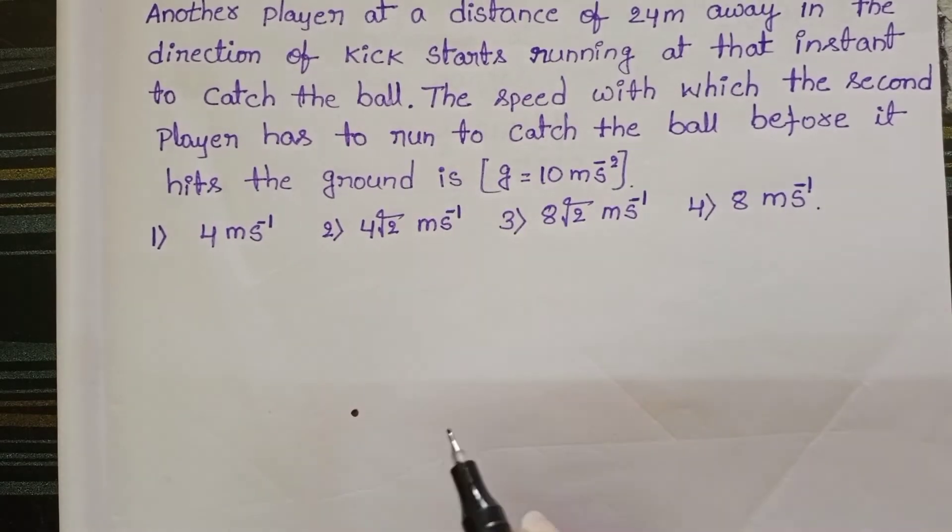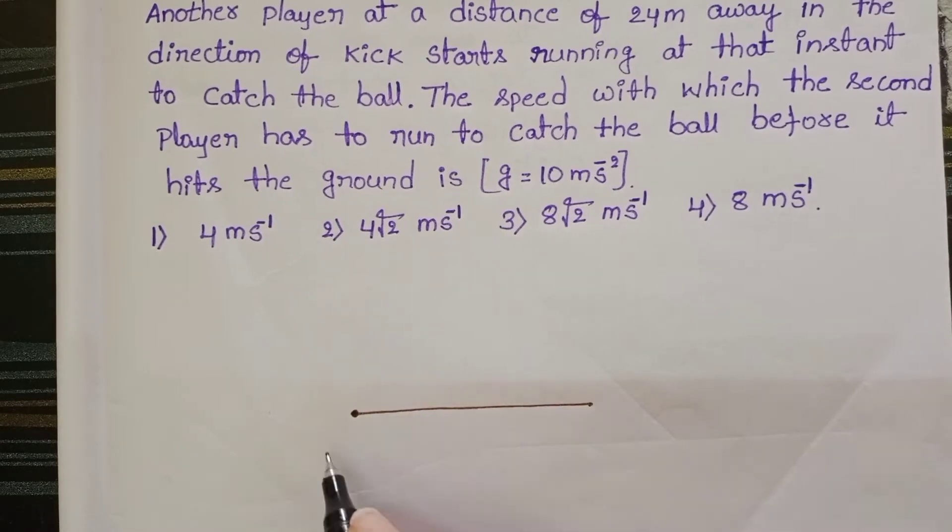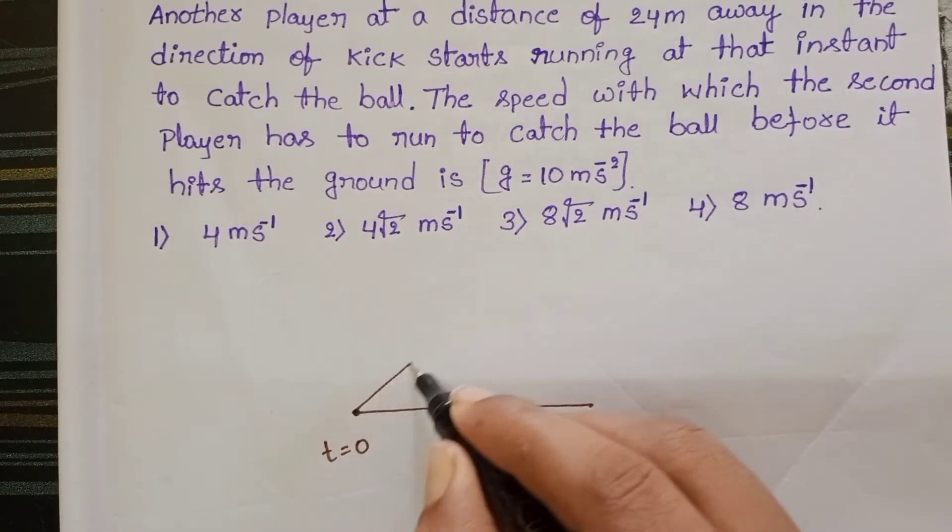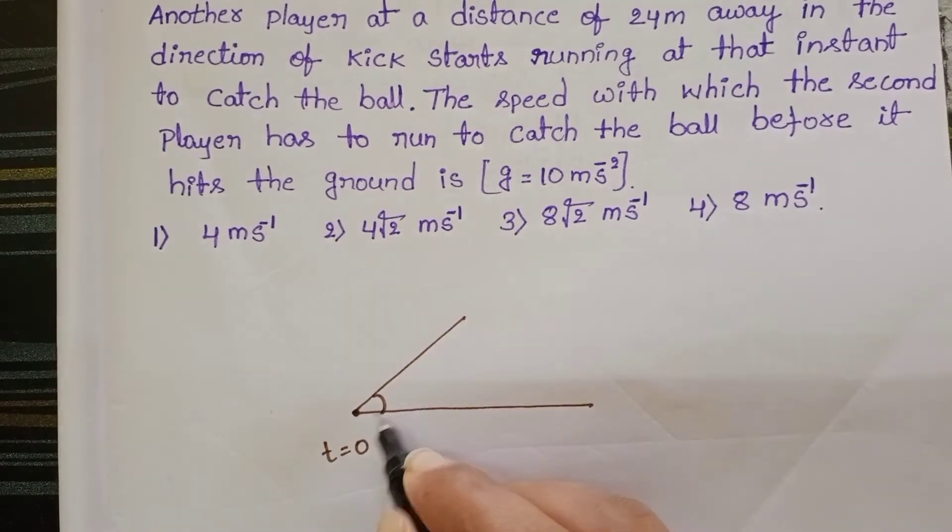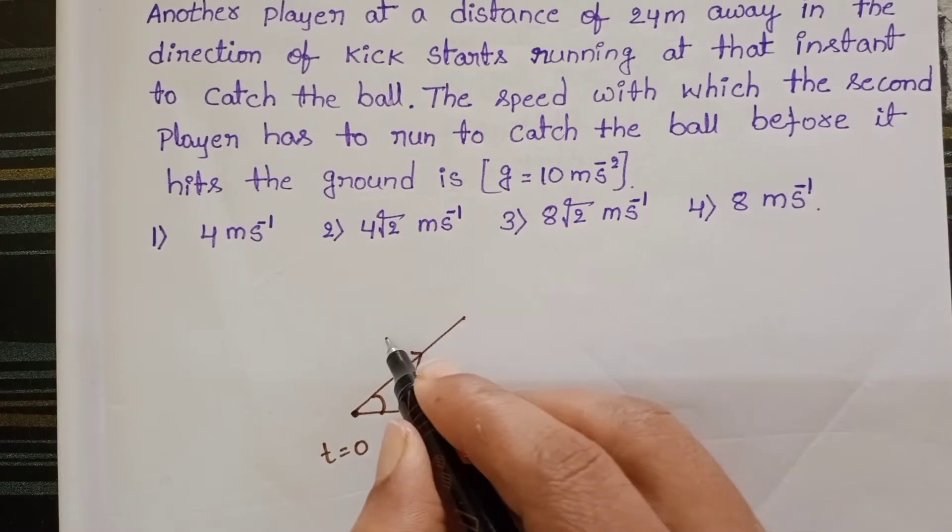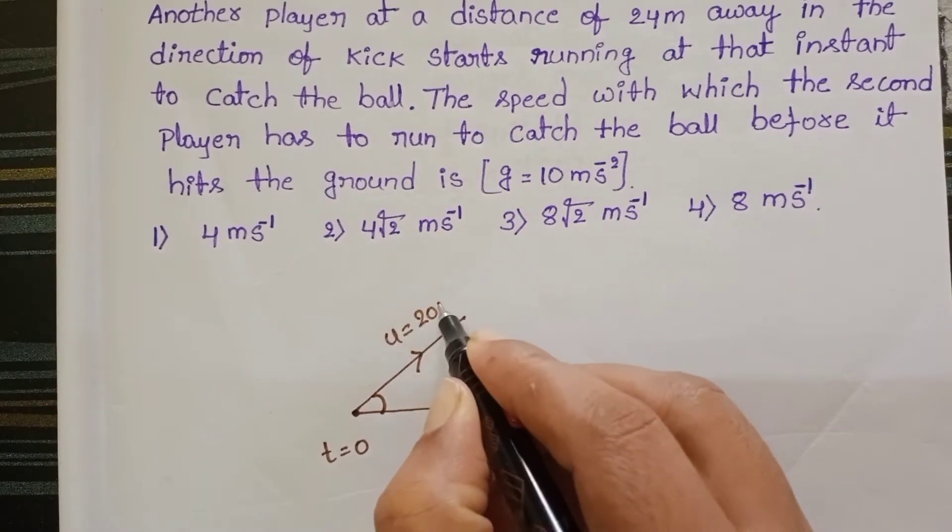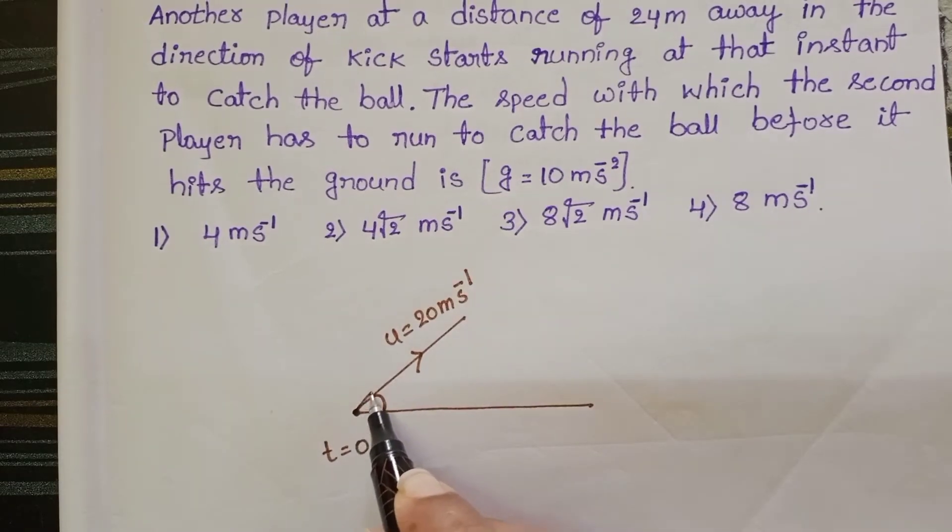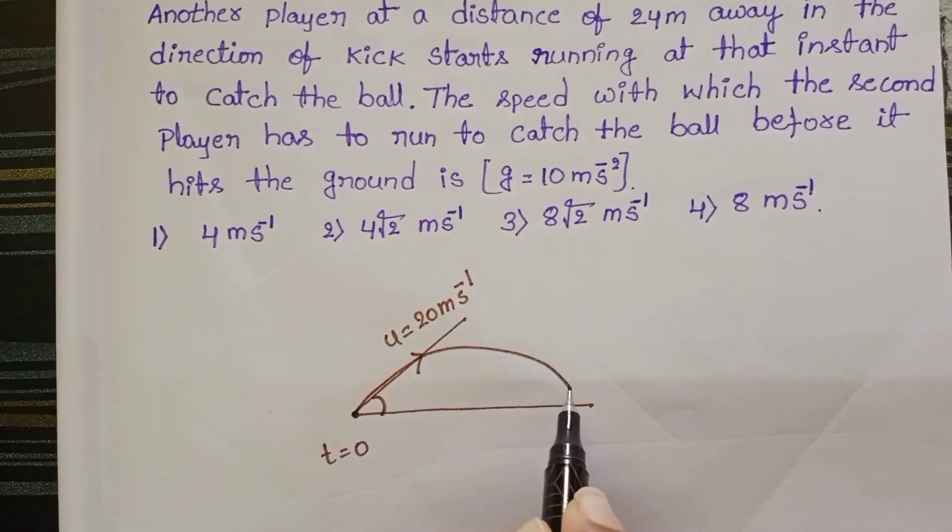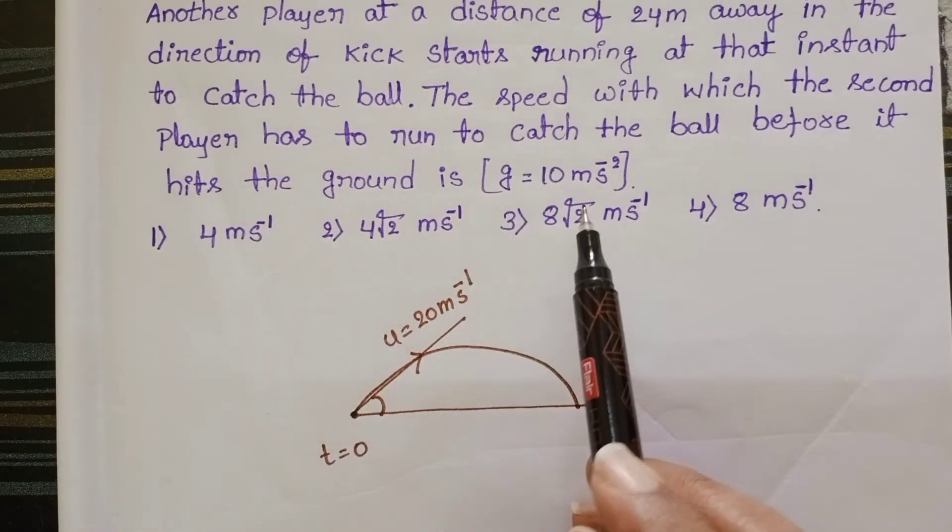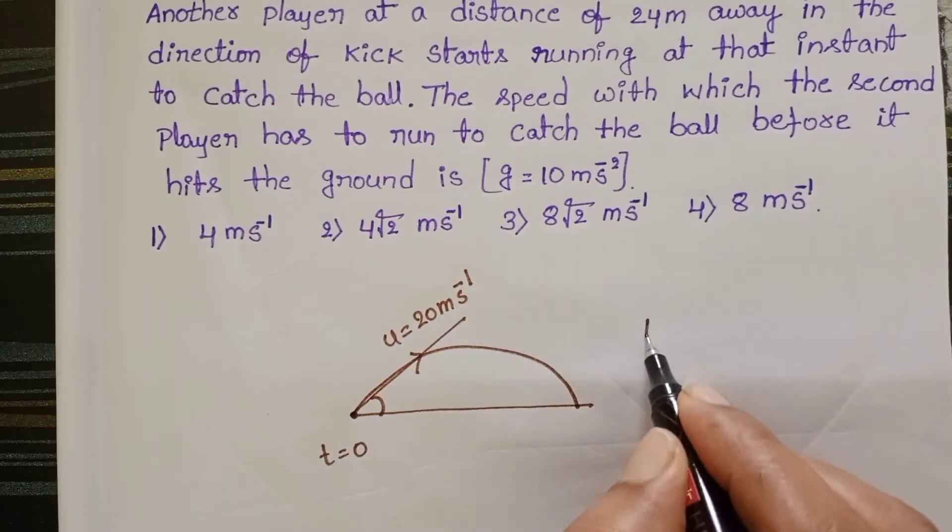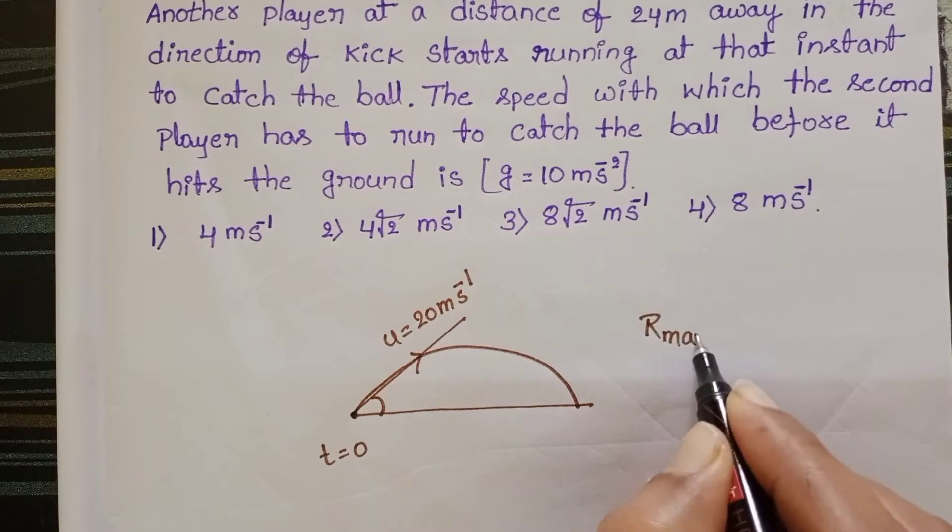In this diagram initial position of the player when time is equal to 0 he kicks a football obliquely with a velocity 20 meters per second. So in case of the obliquely projectile motion it follows the parabolic path. So one more information here range is maximum. The maximum horizontal distance is called range and here range is maximum range.